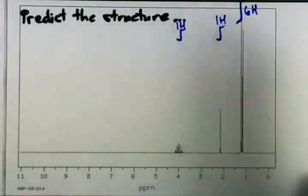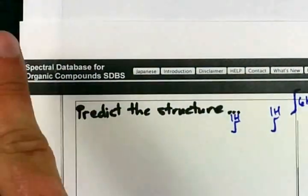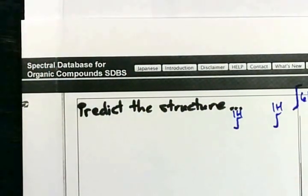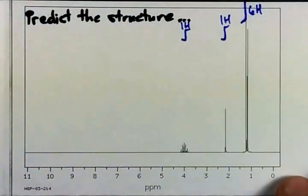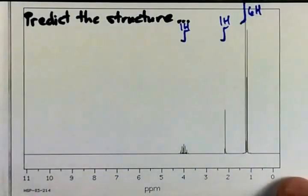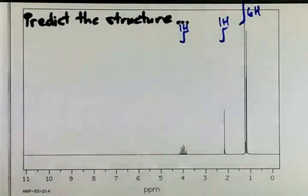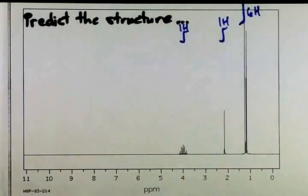I downloaded a 1H NMR spectrum from the spectral database for organic compounds online. It's a Japanese website. And this is the NMR spectrum for some molecule, and I'm not going to tell you what the molecule is. You're going to help me figure it out.